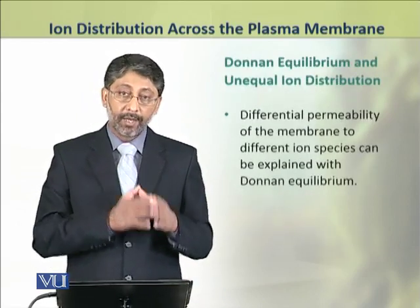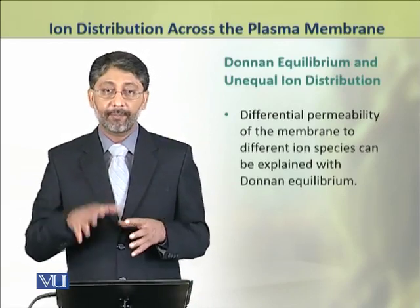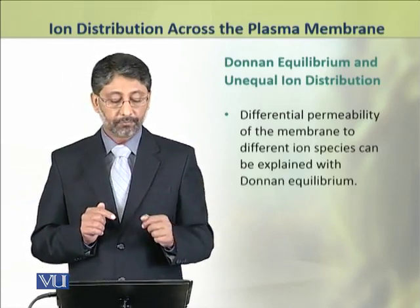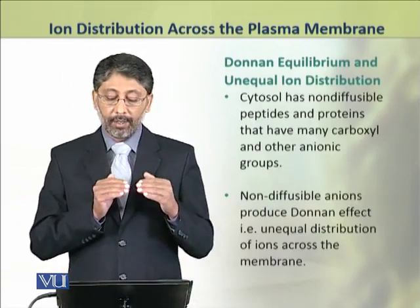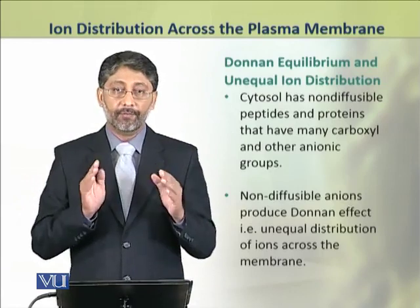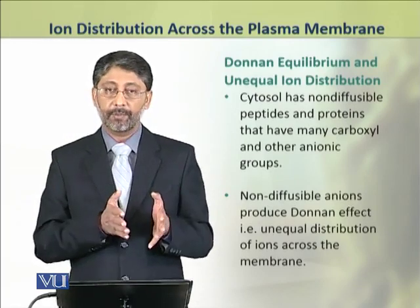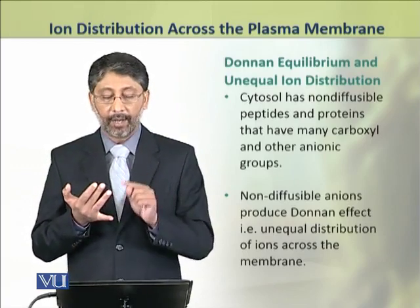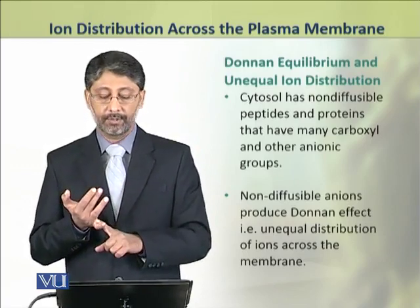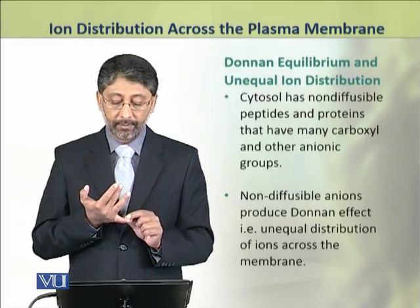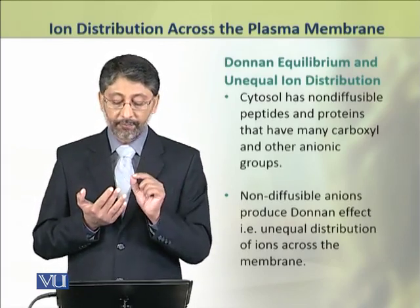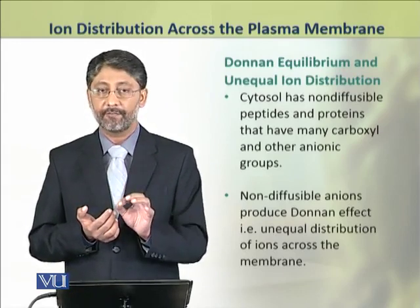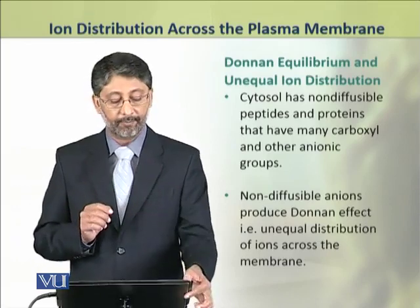The unequal distribution of ions has a basis in the Donnan effect and Donnan equilibrium. As cytosol has many non-diffusable peptides and proteins that have carboxyl and other anionic groups, due to these anions, the Donnan effect is produced that results in unequal distribution of ions across the plasma membrane.